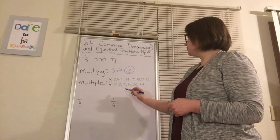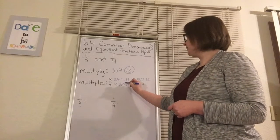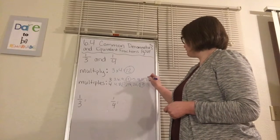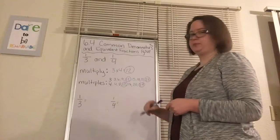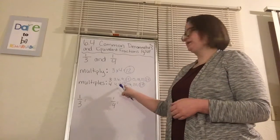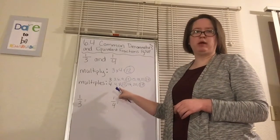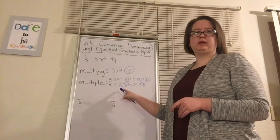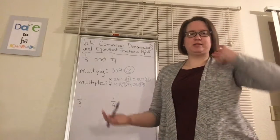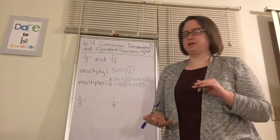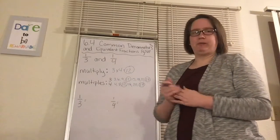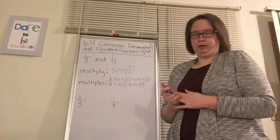Then we can circle our common denominators. So we have 12 and we have 24. But you want to find your least common denominator — the smallest one will make it easier in the long run after we add or subtract in the simplifying process. So now we have our common denominator being 12.